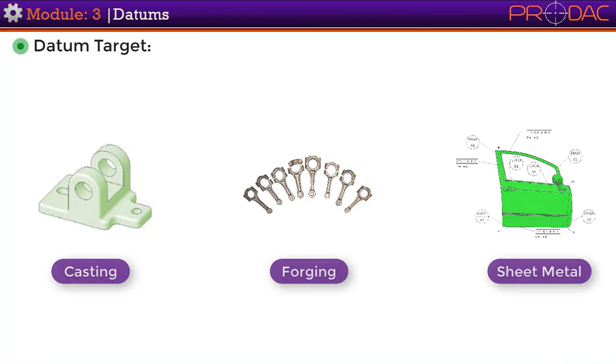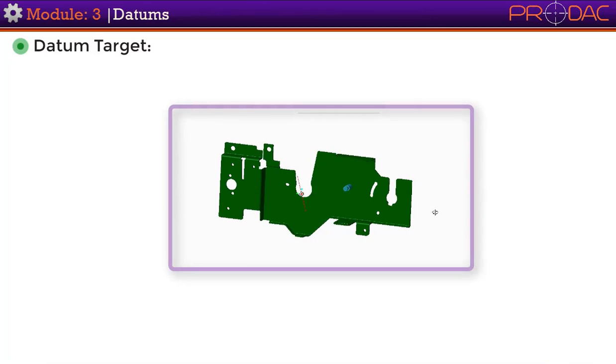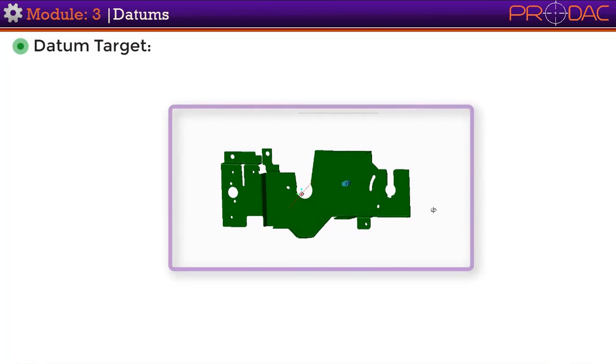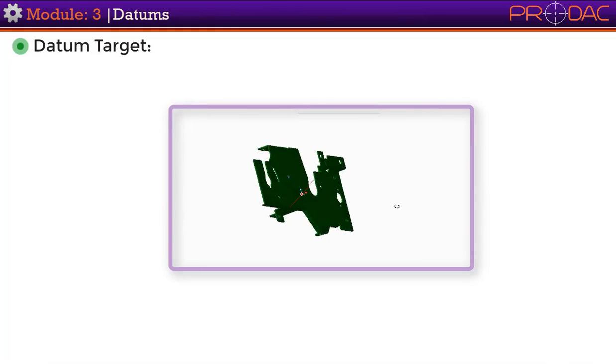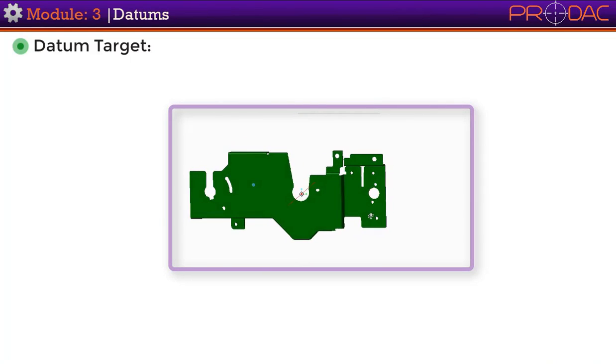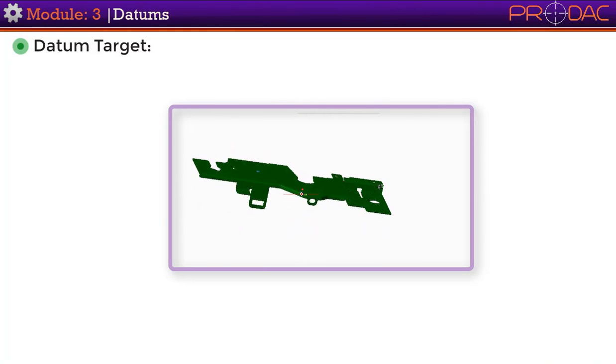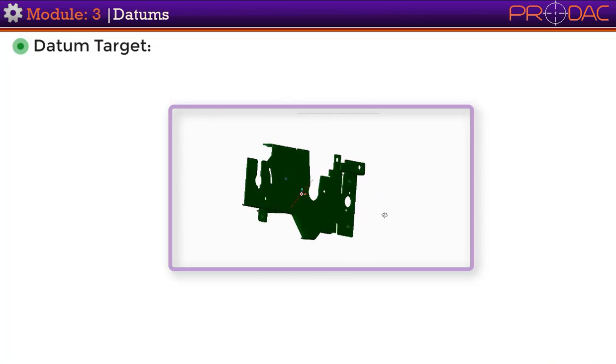For example, the part shown here is a metal sheet part and this cannot be constrained into a datum reference frame due to its geometry. Therefore, to inspect this kind of part, we have to use datum targets.